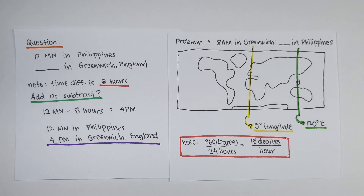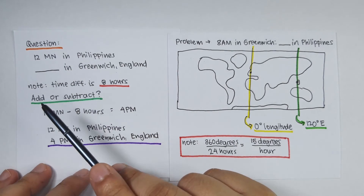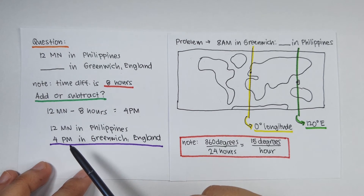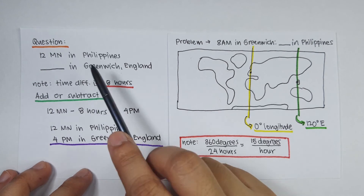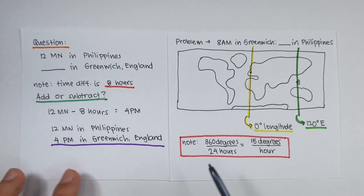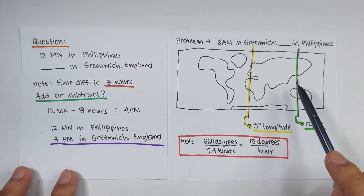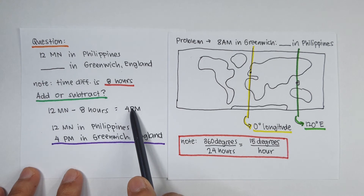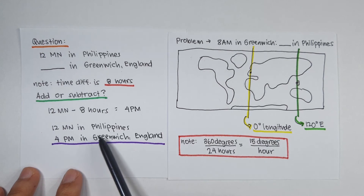But if the question is the other way around — say you are asked: if it is now 12 midnight in the Philippines, what time is it at Greenwich, England? We have already computed that the time difference is 8 hours. Now, should we add or subtract? We have to subtract, because we are looking for Greenwich time, and Greenwich time is way behind Philippine time. So 12 midnight minus 8 hours equals 4 p.m. — meaning if it is 12 midnight in the Philippines, it is 4 in the afternoon at Greenwich, England.